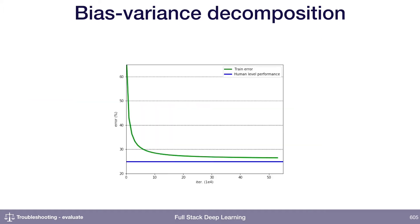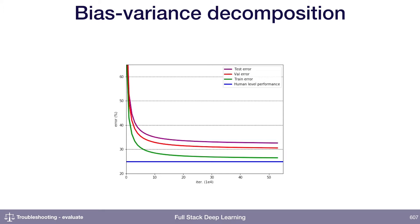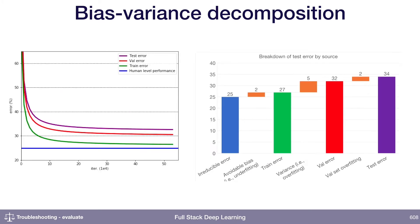To review, suppose that you have some human level of performance, which is the blue line there. Your training curve will generally look like a decreasing curve that approaches that blue line. Your validation curve is typically a little bit higher than your training curve, and your test error curve is typically a little bit higher than your validation error. The bias-variance decomposition decomposes the final test error into its component parts.